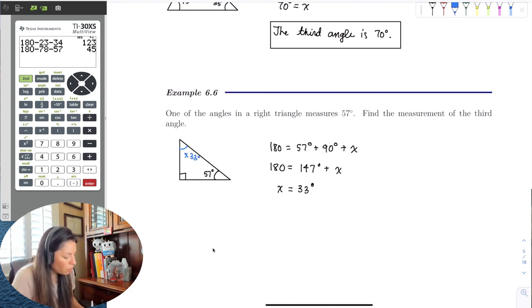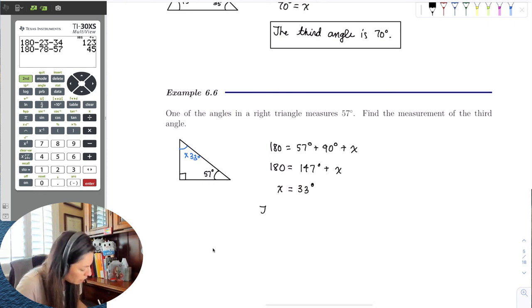Now, of course, we didn't ask for x because we just put it in there as a placeholder. So we would say the third angle is 33 degrees.